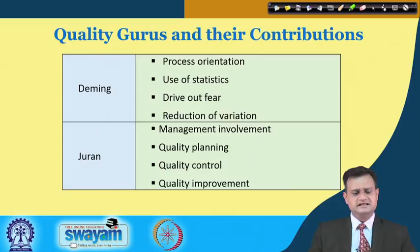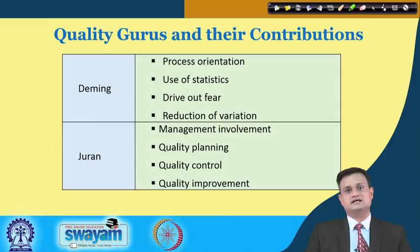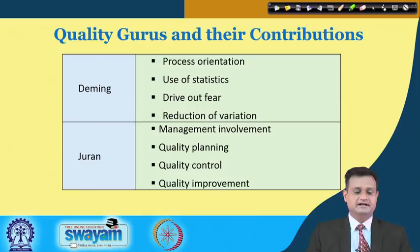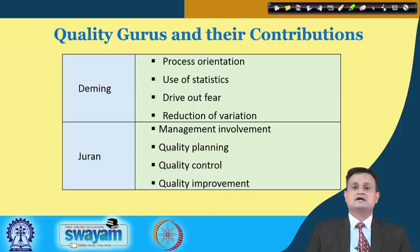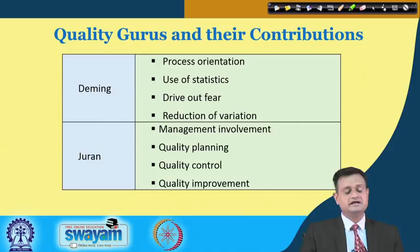Let us see some key contributions of the quality gurus. Deming heavily emphasized process orientation, control of processes for better variability reduction, and the use of statistics. He was a great advocate of driving out fear — Deming believed that people living under fear of losing their job or receiving a memo from top management cannot show their passion and commitment for quality. Drive out fear and create an open-minded culture where people feel motivated to participate in quality initiatives.